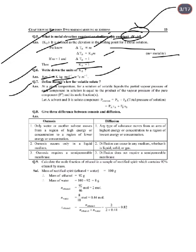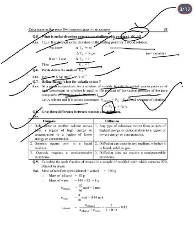Next: Define Raoult's law for volatile solutes. At a given temperature for a solution of volatile liquids, the partial vapor pressure of each component in a solution is equal to the product of the vapor pressure of the pure component and its mole fraction. For two components A (solvent) and B (solute), P_solution equals P_A plus P_B.